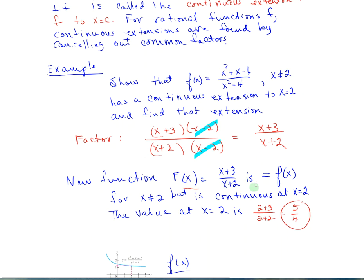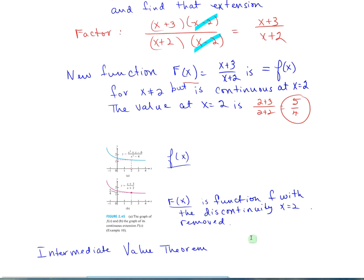We're left with x plus 3 and x plus 2. The new function is f of x for x not equal to 2, but it is continuous at x equals 2. The value at x equals 2 is 5 over 4.